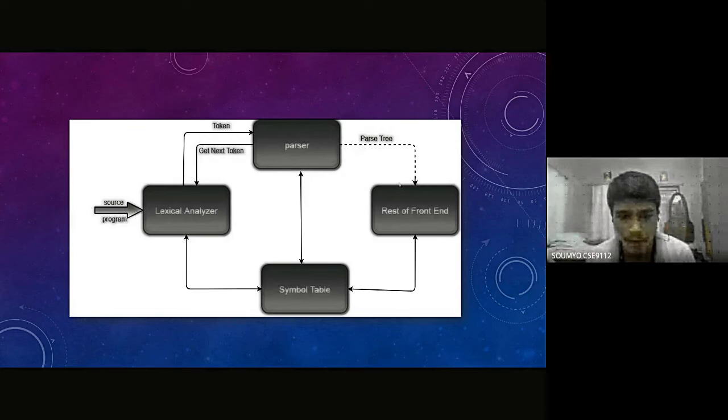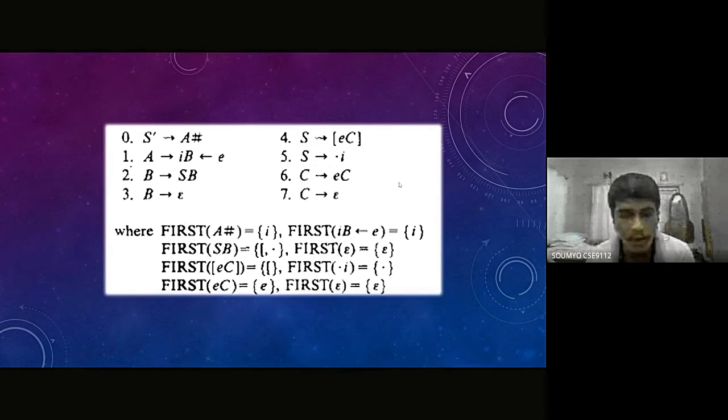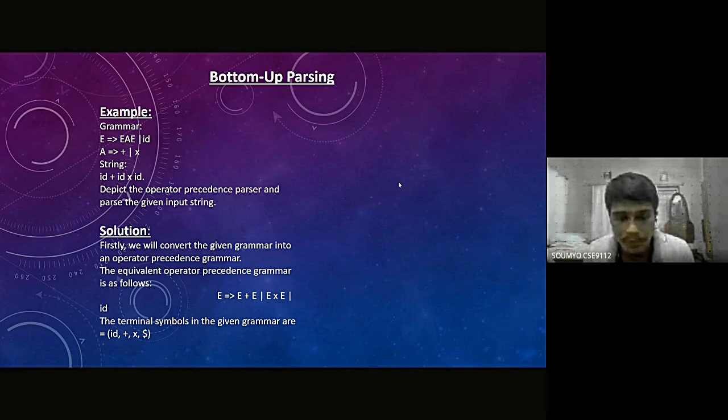Here I have taken one problem. The production rules are: S → A#, A → Ba, and B → SB. We are computing FIRST for this grammar using the basic FIRST method.